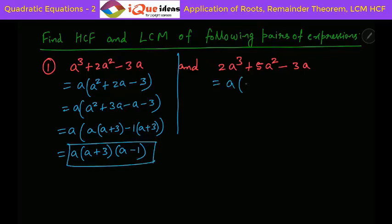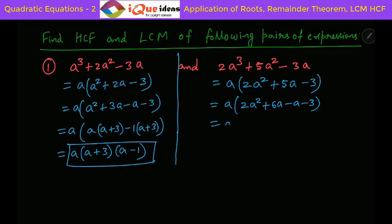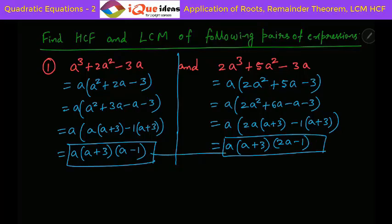For the second expression, taking A common gives us A into 2A square plus 5A minus 3. Now 2 into 3 is 6 and the difference has to be 5, so it is 6 into 1. This becomes A into 2A square plus 6A minus A minus 3. From 2A square and 6A, 2A is common giving A plus 3, then minus 1 common again giving A plus 3. So we have A into A plus 3 into 2A minus 1. The thing common to both expressions is A and A plus 3, so HCF is A into A plus 3.